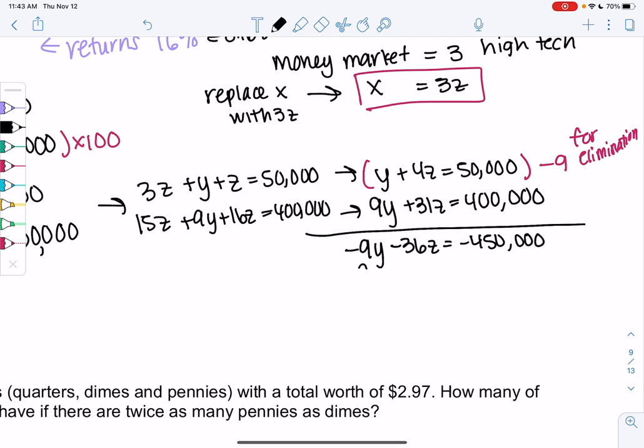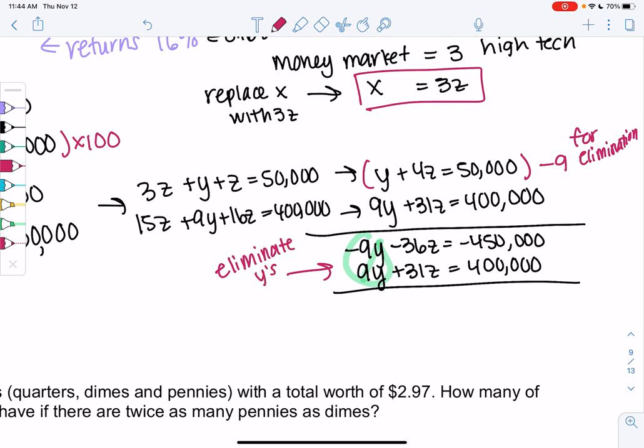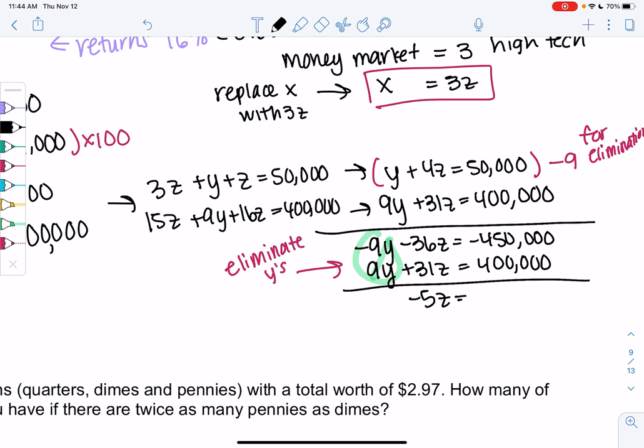Second equation is untouched, but the Y's should eliminate. And then we eliminated the Y's. Negative 36 plus 31 gives me a negative 5Z equals negative 50,000. So Z is 10,000.